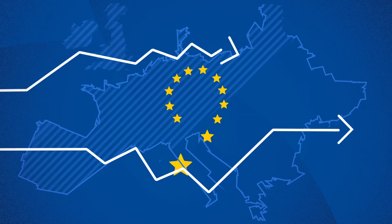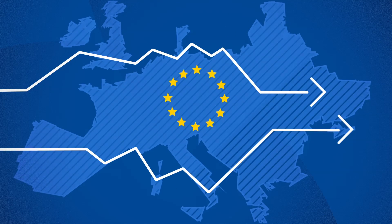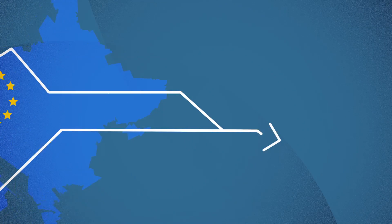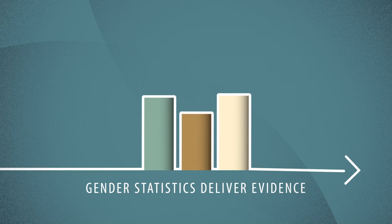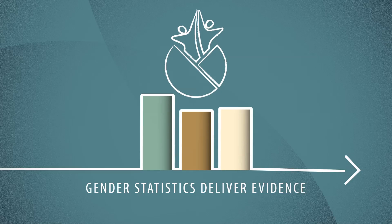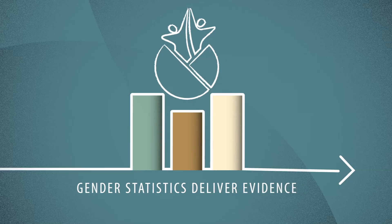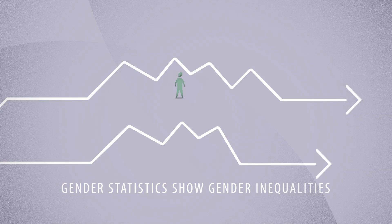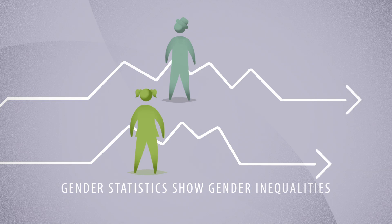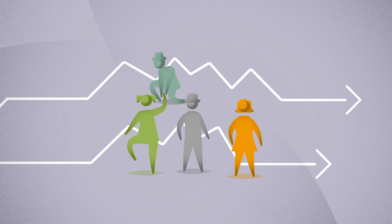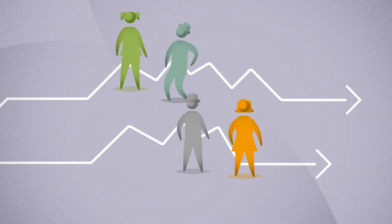Equality between women and men is a fundamental value of the European Union. In order to achieve gender equality, we need actual evidence about the real situation of women and men. Gender statistics give us evidence of the reality of women and men in many social areas. They show us the gender inequalities in numbers.